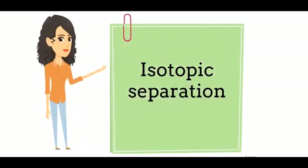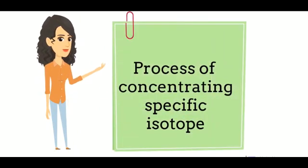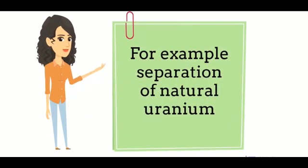Hello, students. Today I will tell you about isotopic separation. It is a process of concentrating specific isotopes of a chemical element by removing other isotopes. It is separated by the process of tonnage into enriched uranium and depleted uranium.